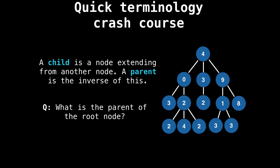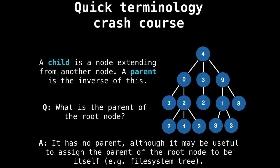We have the concept of child and parent nodes. A child node is a node that extends from another node. Think of it as going downwards, and a parent node is the inverse of this, so you're going up towards the root. An interesting question is, what is the parent of the root node? The answer is that the root node has no parent, although sometimes it may be useful to say that the parent of the root node is itself.